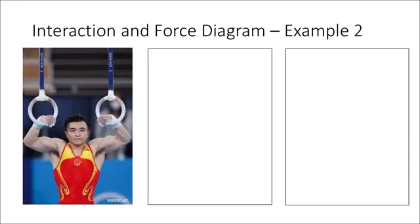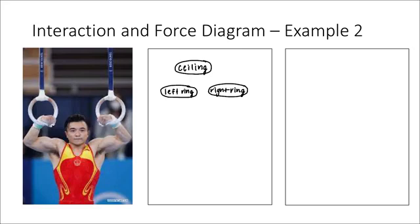In this example, I have an Olympic gymnast holding on to two rings attached to the ceiling. I'll begin by listing all of the objects in my scenario. I know that the ropes are attached to the ceiling, and I can treat the ring and the rope as a single object in this case — and I know I have two of them. I also have to include the gymnast. Since the gymnast is not touching the floor, I'll just include the earth and not the floor. Now that I've got all of my objects, I'll go ahead and start by showing the force of gravity between the earth and all of the objects.